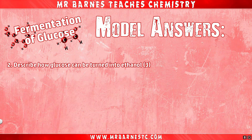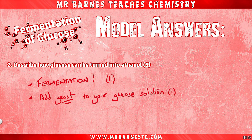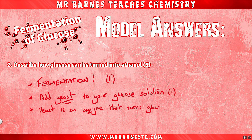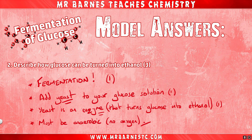Question two: how do we convert glucose to ethanol? First mark: fermentation — name the process. Second mark: add yeast to your glucose solution. Third mark: state that yeast is an enzyme, which turns glucose into ethanol — the key word being enzyme. Finally, you should state that this needs to be anaerobic conditions, or without oxygen. Any three of those four points gets you three marks.